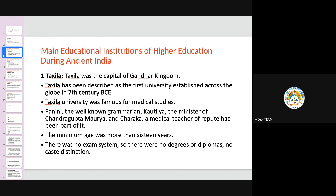The first is Takshashila. Takshashila was actually the capital of the Gandhar kingdom. Gandhar is a region which at present covers some part of Afghanistan and Pakistan. Takshashila University was considered to be the first university in the world and it flourished from roughly 600 or 500 BCE to 500 or 400 BCE — approximately the 7th century BCE. This university was famous for medical studies.